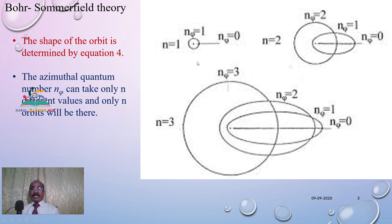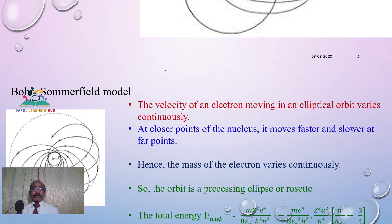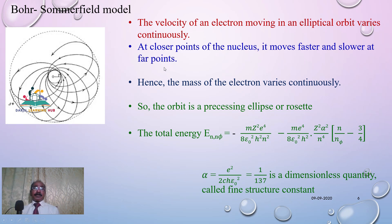So Sommerfield, in this manner, explained the elliptical orbits of the atom. So instead of one single orbit, we have, for n equal to 3, we have three orbits. Similarly, for second orbit, we have two orbits, because azimuthal quantum number is there. Based upon this, he proposed the model.